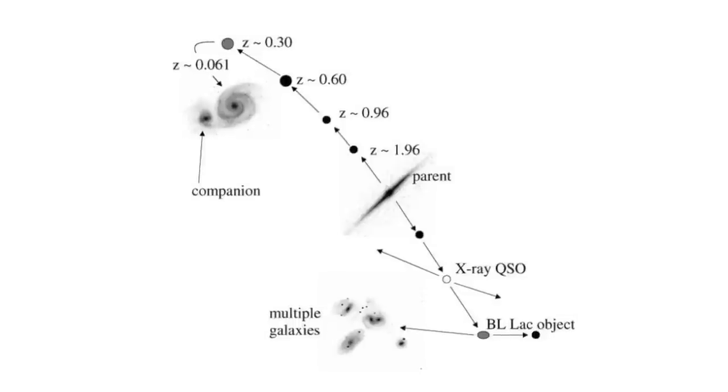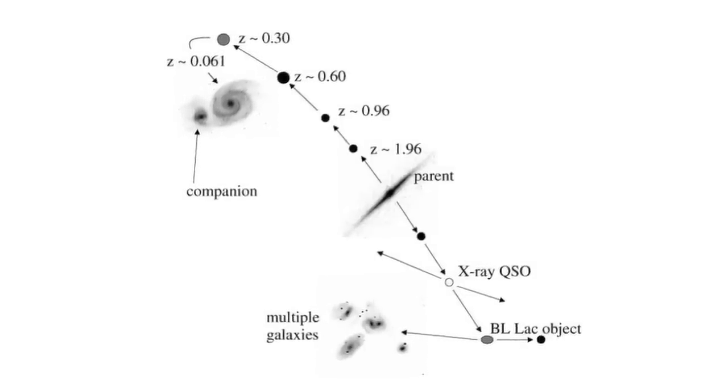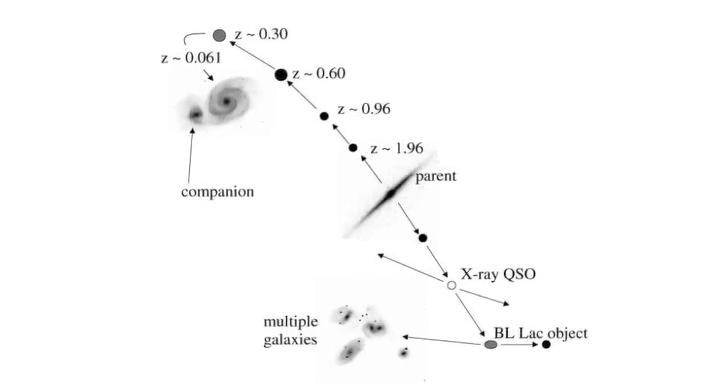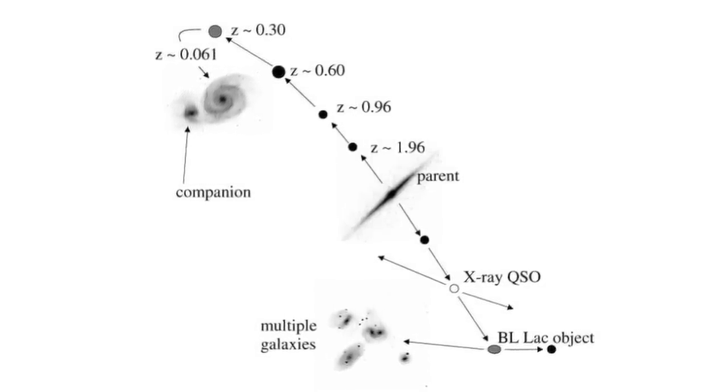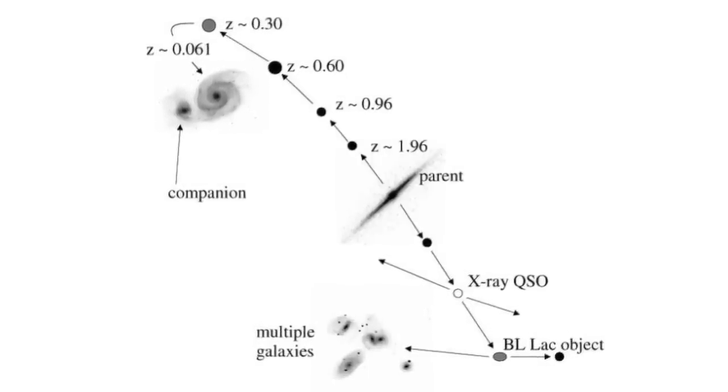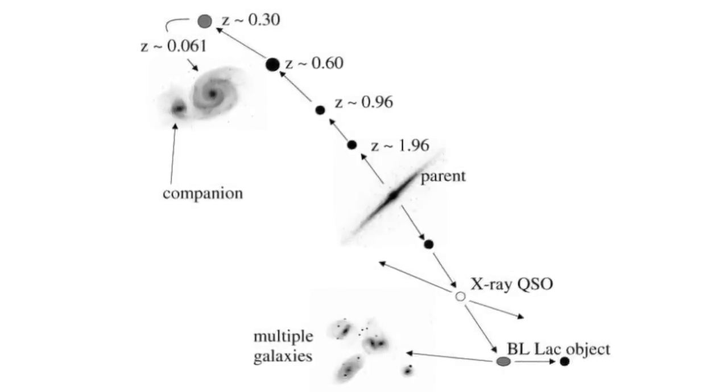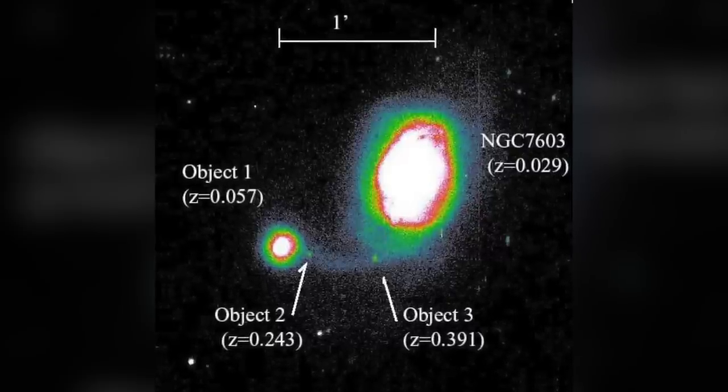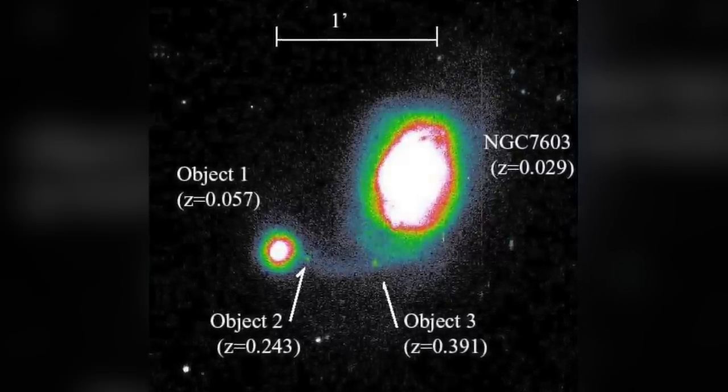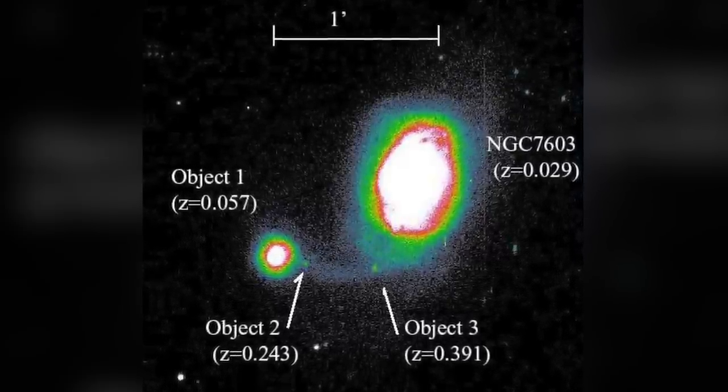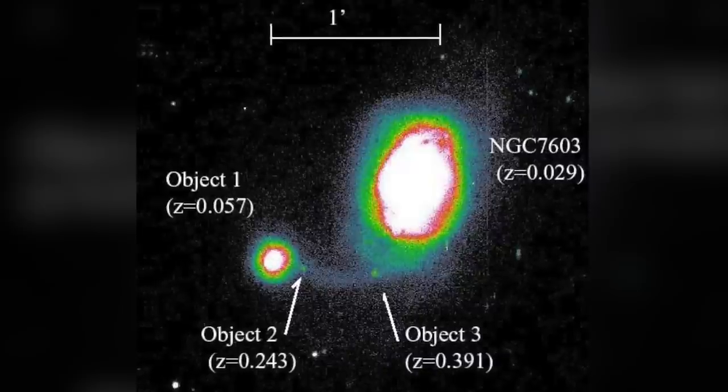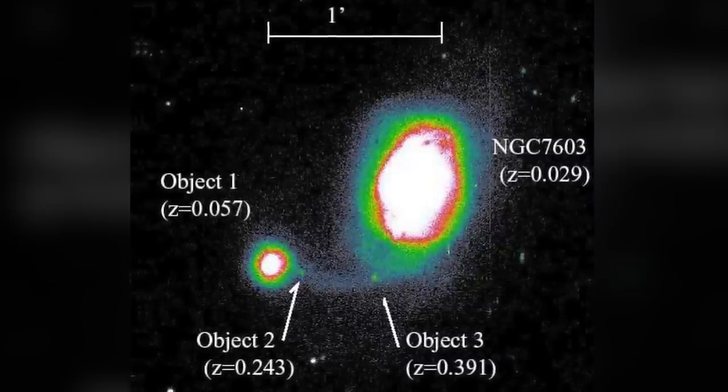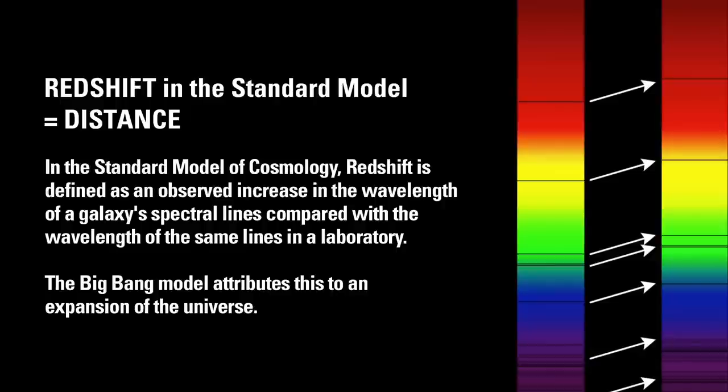Of course, what's obvious to one eye is not to another, because eyes tend to see what they believe. It's no shock that consensus eyes refuse to see ejection pairs and their connections. To acknowledge those connections would be to falsify the belief in redshift as an indicator of distance, and by extension to falsify the Big Bang hypothesis. That would cause job losses for the consensus of astronomers.